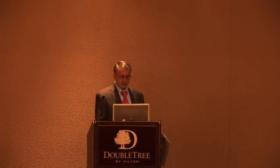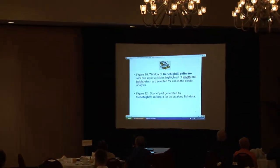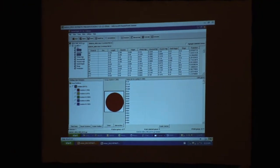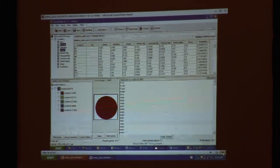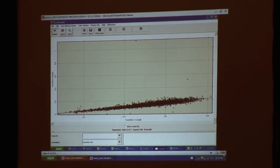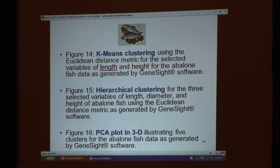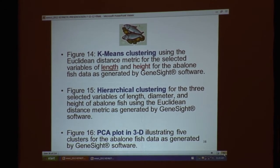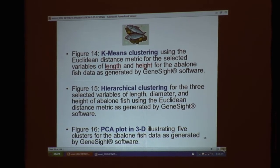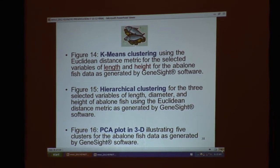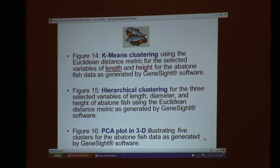I used GeneSight software for the variables of length and height for cluster analysis, and I did a scatter plot for the abalone fish data. Here's the GeneSight window for cluster analysis for the variables of length and height. The scatter plot shows a strong, pretty linear regression. I then did K-means clustering using the Euclidean distance metric, hierarchical clustering using the Euclidean distance metric, and principal component analysis in three dimensions including five clusters for the abalone fish data — all generated by GeneSight.